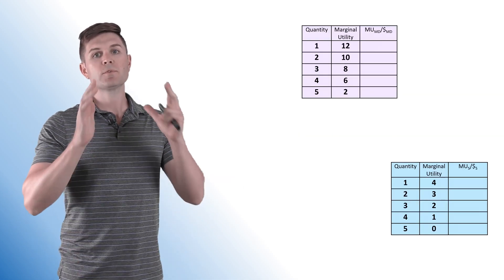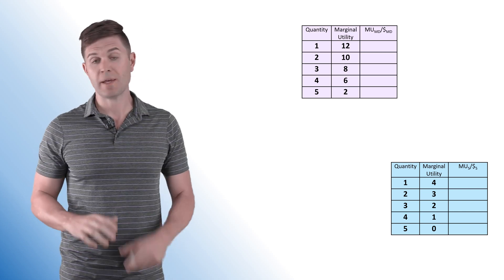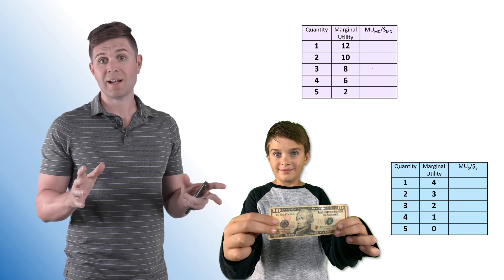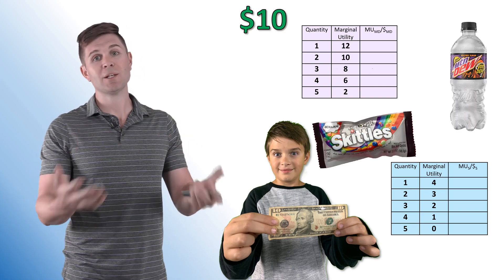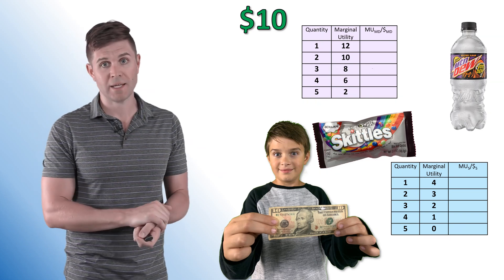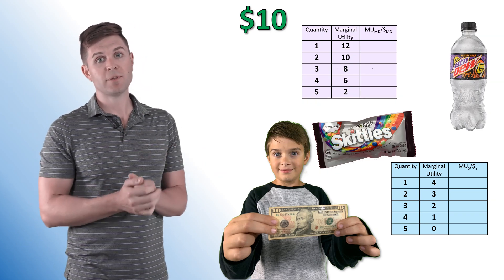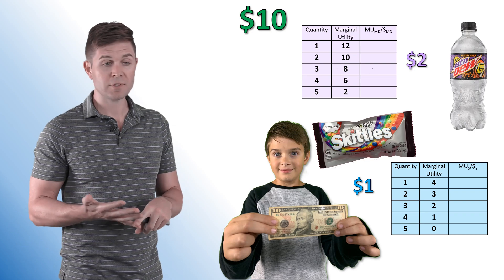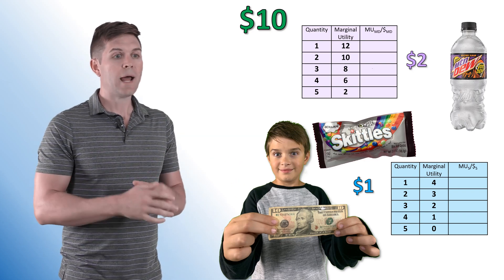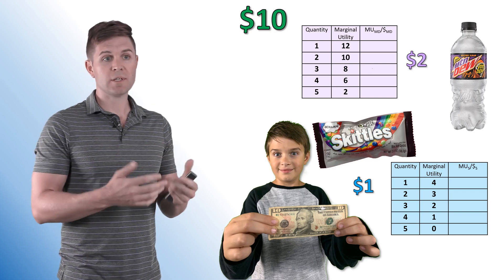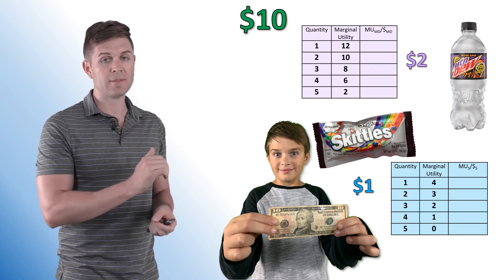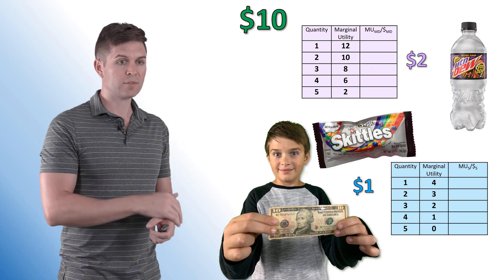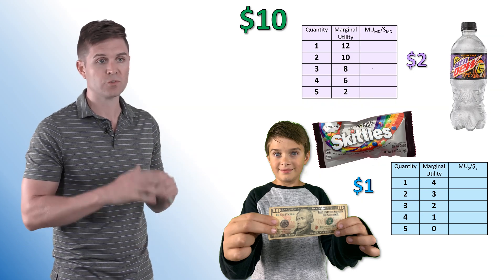Let's move on to an example. I'm going to give my kid $10 and let him go to the store to buy what he wants. He's going to spend it on Halloween-themed soda and candy — specifically the mystery flavored Mountain Dew at about $2 each, and zombie Skittles at about $1. We're already given his marginal utility information, and we can see clearly that marginal utility is going to diminish for both items as he buys more.